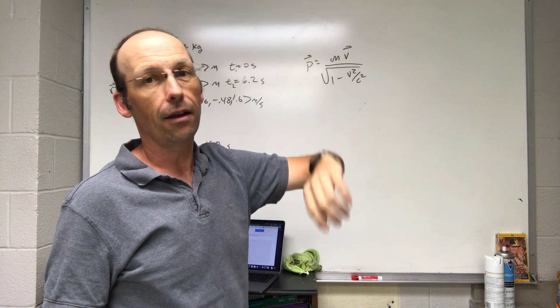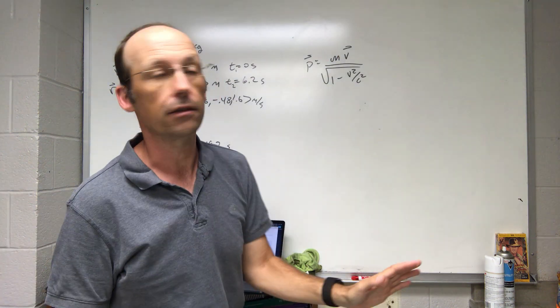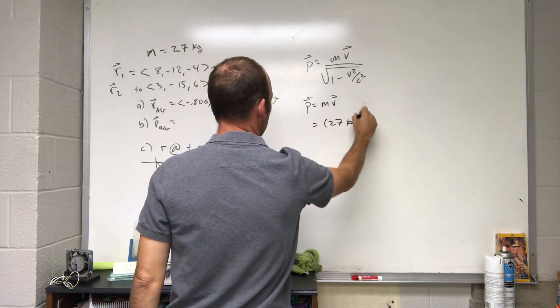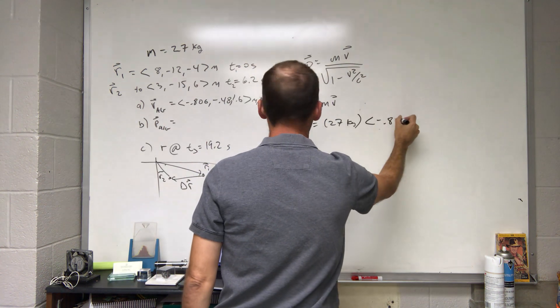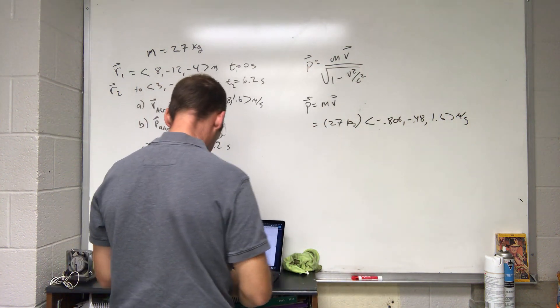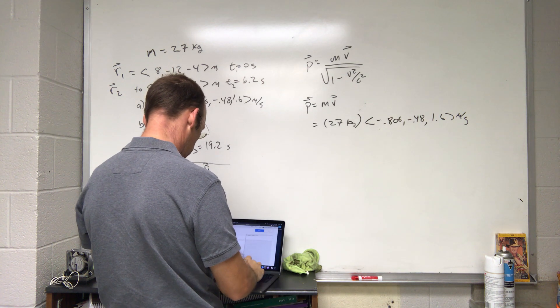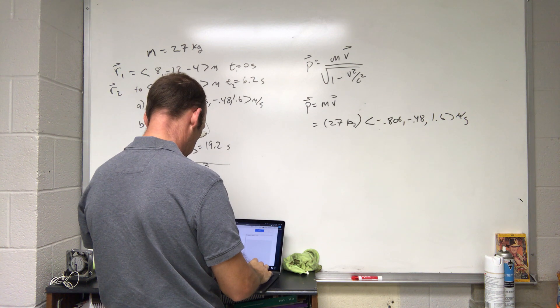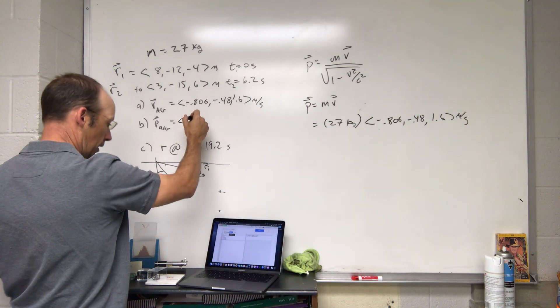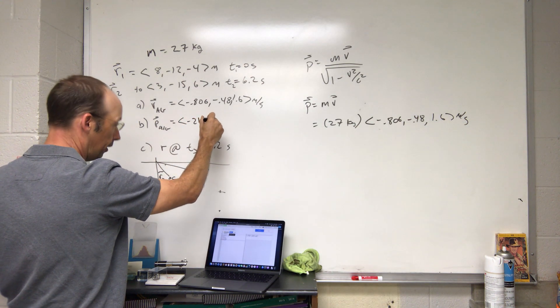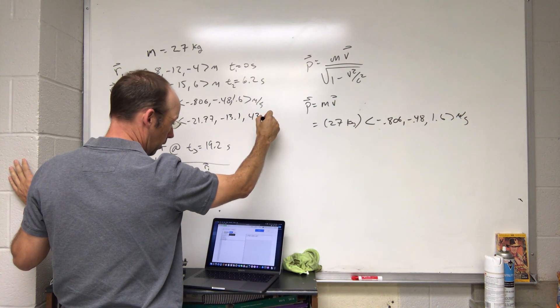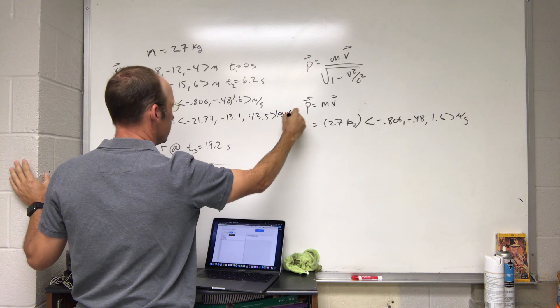Since I have something around 1 meter per second divided by 3 times 10 to the eighth meters per second, I'm gonna get 9 times 10 to the 16th in the denominator, so you just get 1 on the bottom. So p equals mv. It's just going to be the mass of 27 kilograms times the velocity (-0.806, -0.48, 1.6) meters per second. I get negative 21.77, negative 13.1, and 43.5 kilograms meters per second.